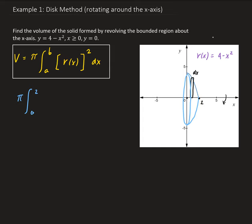So when x is 0, the radius for that part will be 4. When x is 2, the radius will be 0 there.